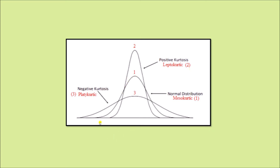Looking at this diagram: curve number one is what an ideal normal curve looks like. Remember, all three curves shown here are normal curves — they are bell-shaped, smooth, and bilaterally symmetrical — but there are differences: some are wider, some are taller. Curve number one is the standard normal curve, ideally what a normal curve should look like, and this is known as mesokurtic distribution or mesokurtosis.